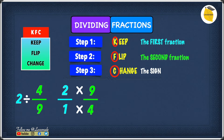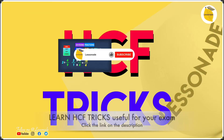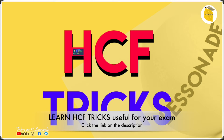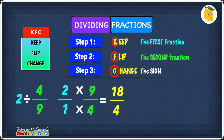Now all we have to do is 2 times 9 and 1 times 4. 2 times 9 is 18, and 1 times 4 is 4, giving us 18 over 4. But 18 over 4 can be simplified because it has a highest common factor. The highest common factor of 18 and 4 is 2. If you're wondering how to find the HCF, I've got a video on that with a shortcut, so go check that out.